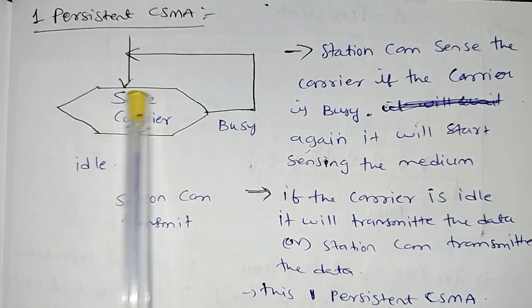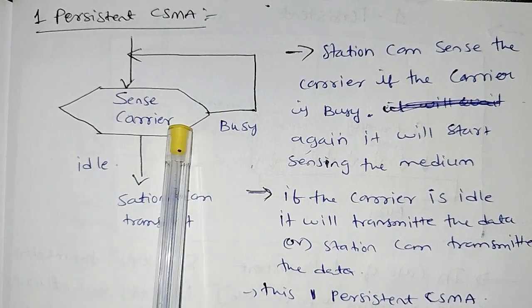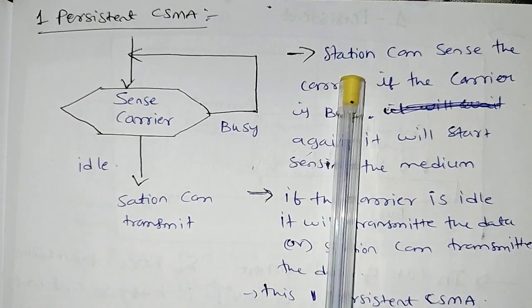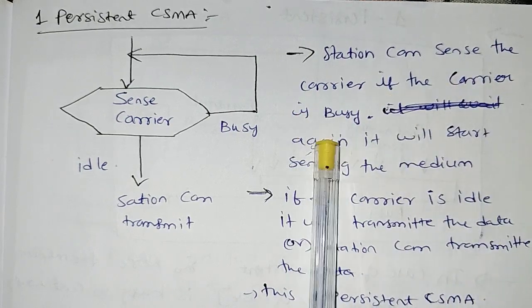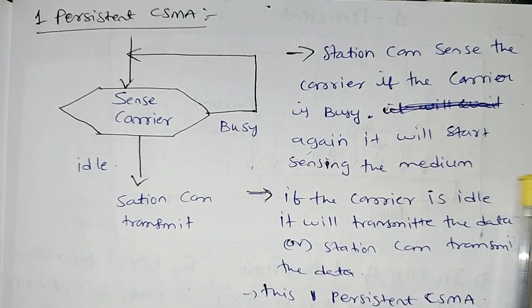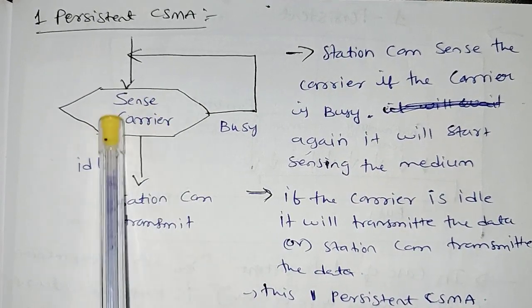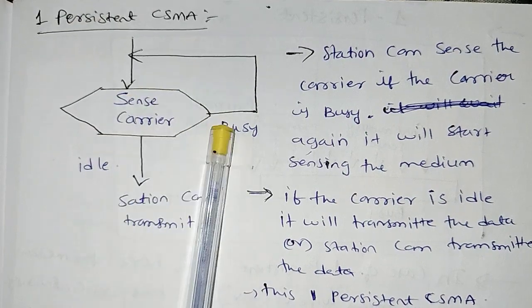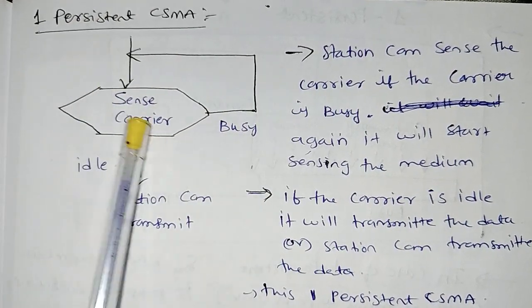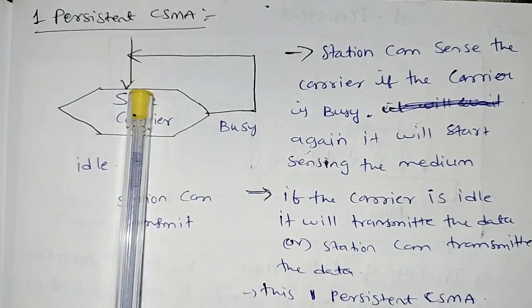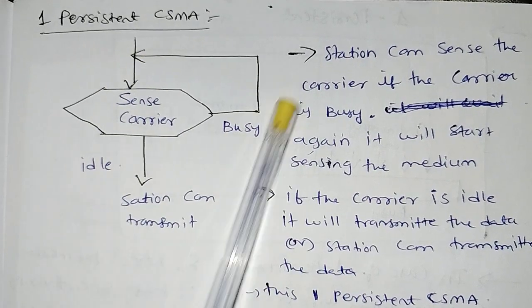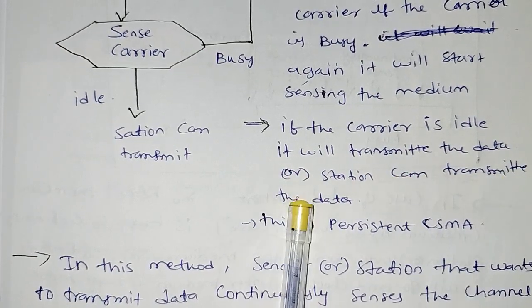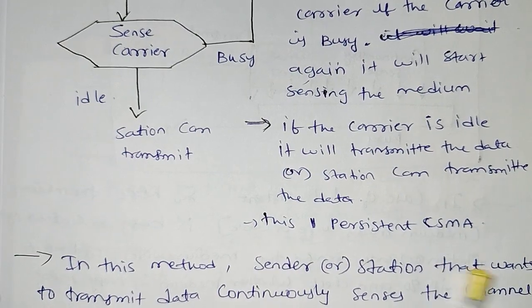In one persistent CSMA, the station senses the carrier. If the carrier is idle, the station can transmit. If the carrier is busy, it will start sensing the medium again continuously until it becomes idle, then immediately transmit the data. This is called one persistent CSMA.